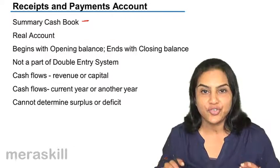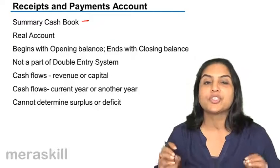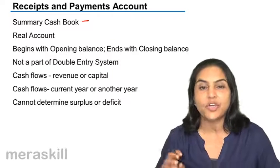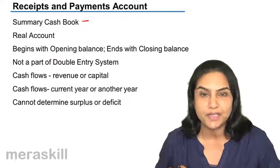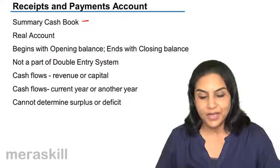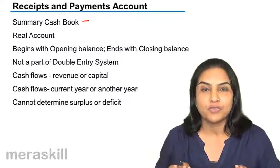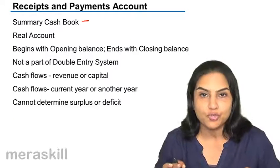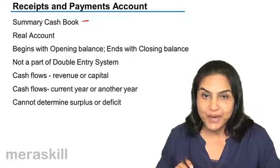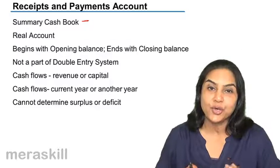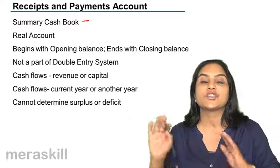The entire cash receipts for the year are summarized under different heads: how much is the total subscription income that has come in, what is the total entrance fees that have come in, what money has come in by selling old newspapers, or if assets like old furniture or library books were sold. Money is recorded irrespective of whether the cash received relates to a previous period, the current period, or the next period.